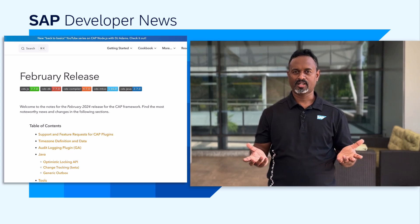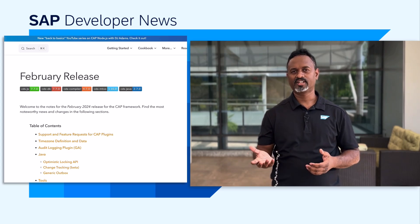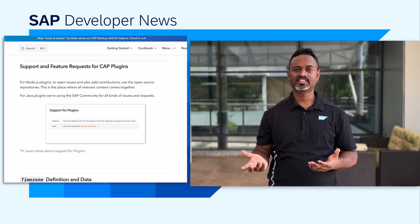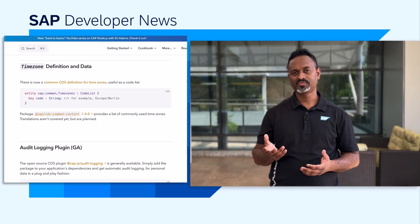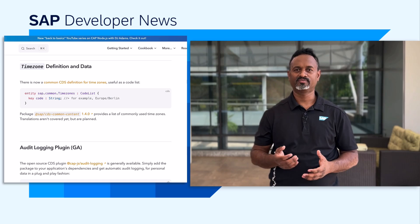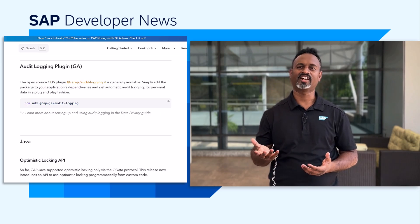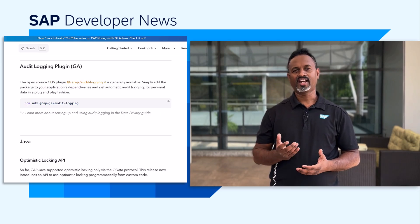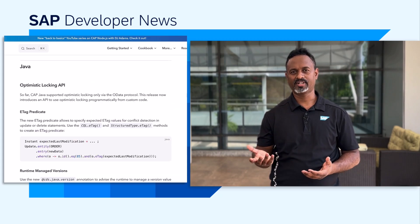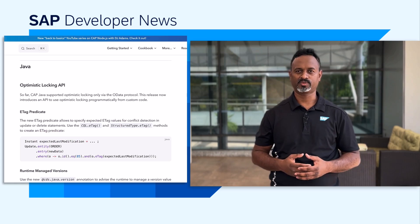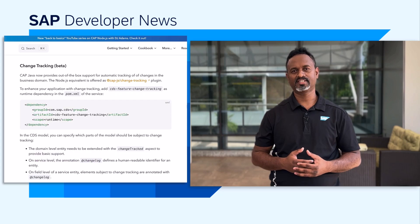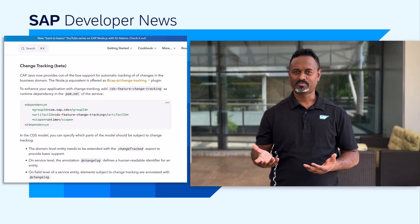We have some information about support and feature requests for CAP plugins. A common CDS definition for time zones is provided that is useful as a code list. The open-source CDS plugin for audit logging is now generally available. Then we have updates for CAP-Java, namely an optimistic locking API that can be called from custom code, out-of-the-box support for automatic tracking of changes, and support for generic outbox.